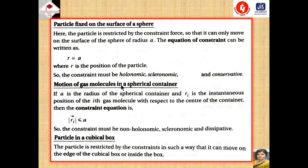Next: motion of gas molecules in a spherical container. If small a is the radius of the spherical container and rᵢ is the instantaneous position of the i-th gas molecule with respect to the center of the container, then the constraint relation is |rᵢ| ≤ a. The constraint is non-holonomic, since an inequality appears. It is scleronomic as it is time-independent, and it is also dissipative.